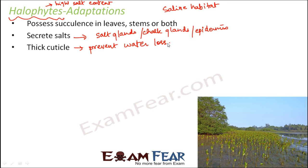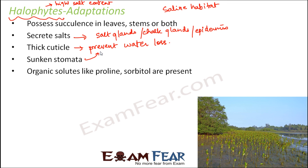Halophytes also have sunken stomata. Stomata are tiny pores through which transpiration — the loss of water from leaf surfaces — takes place. If the stomata are sunken, water loss is reduced, thereby preventing excess water loss from the plant.